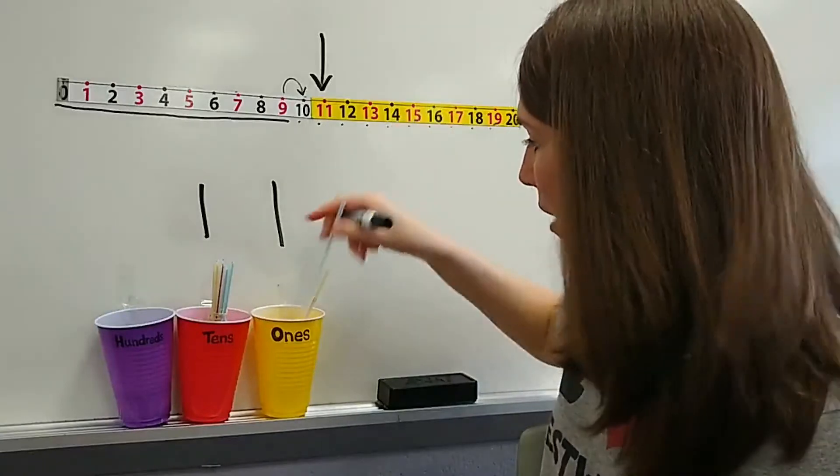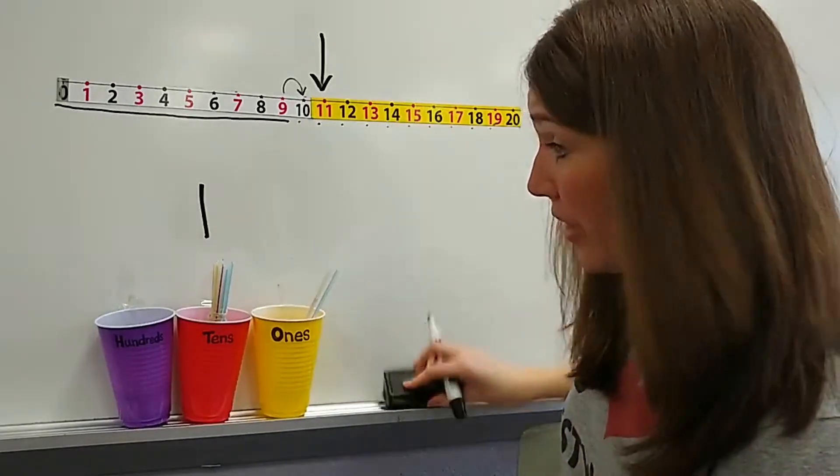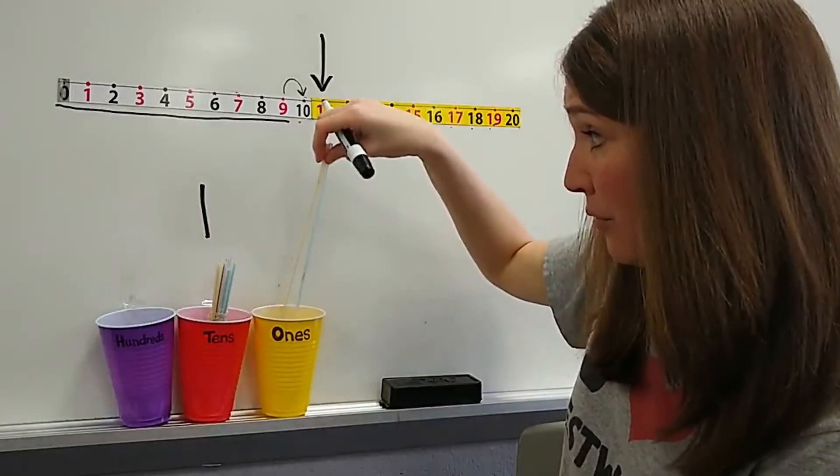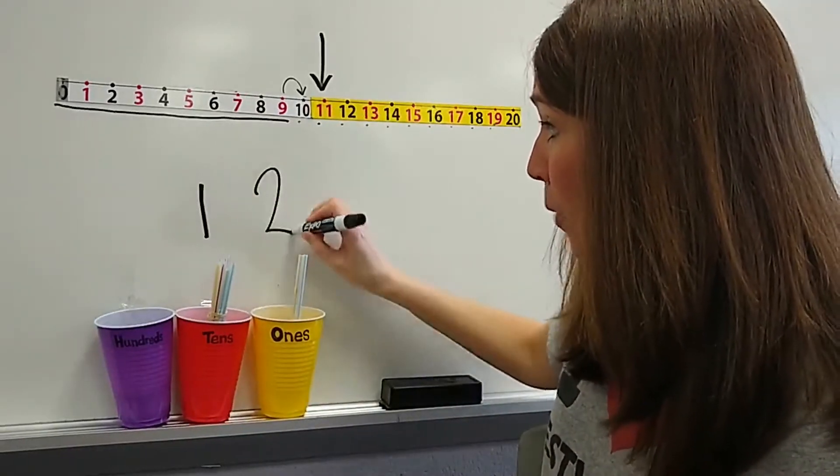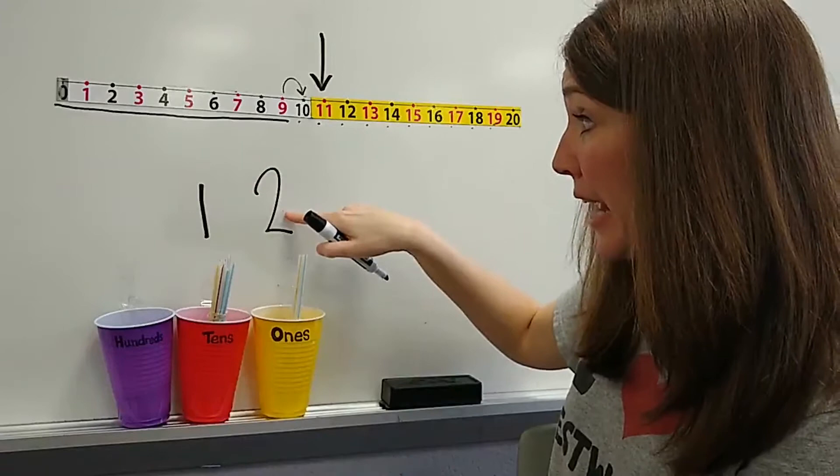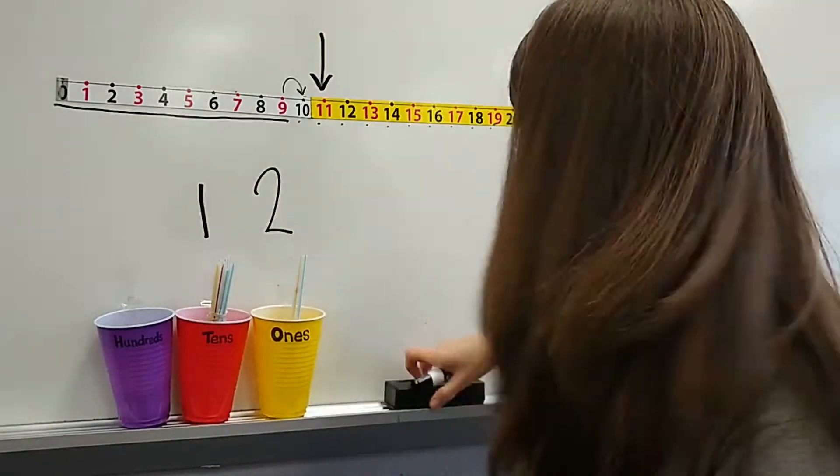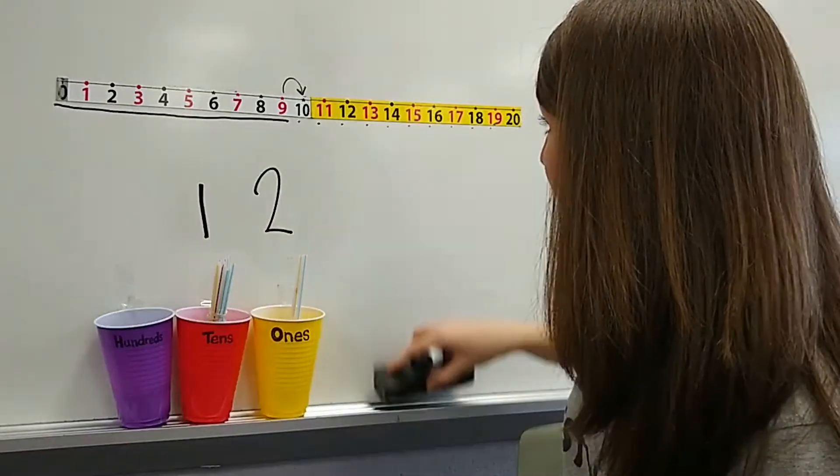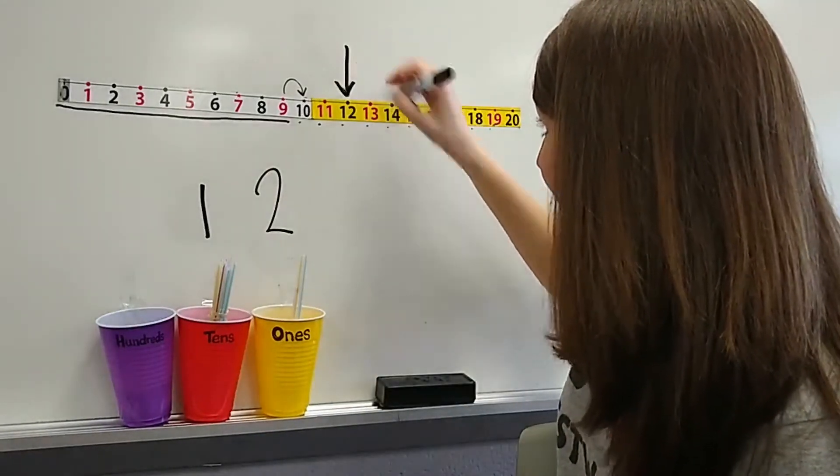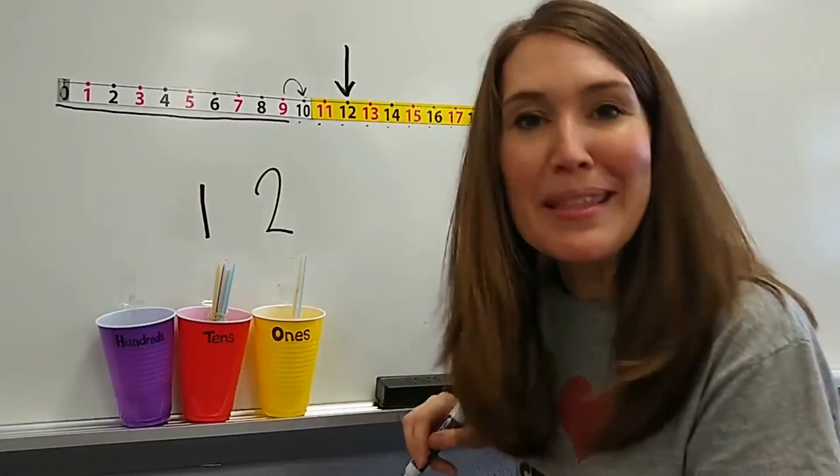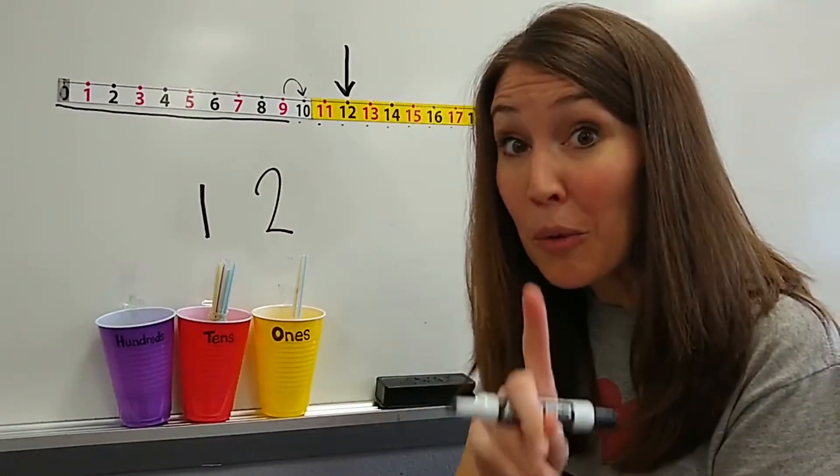If I add one more straw, now I still have one group of 10, but now I have two little ones. One group of 10 and two little ones. My number here is 12. So I'm going to move my arrow. See, one group of 10, two little ones. Every number in the tens family has one group of 10.